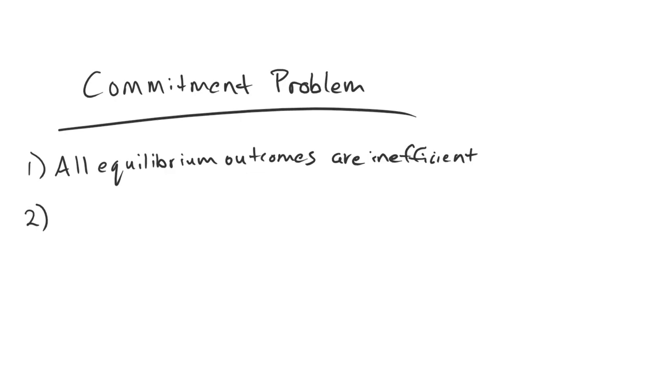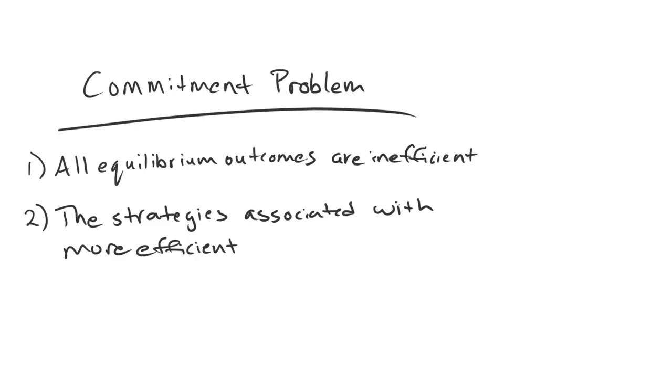The second component deals with getting to those alternative outcomes. Namely, the strategies associated with more efficient outcomes are not credible.